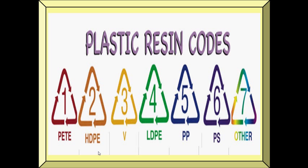Plastic number 1 is for polyethylene terephthalate. Plastic number 2 is high-density polyethylene. Number 3 is polyvinyl chloride. Number 4 is low-density polyethylene. Number 5 is polypropylene. Number 6 is polystyrene. Number 7 is composed of other types of plastic.